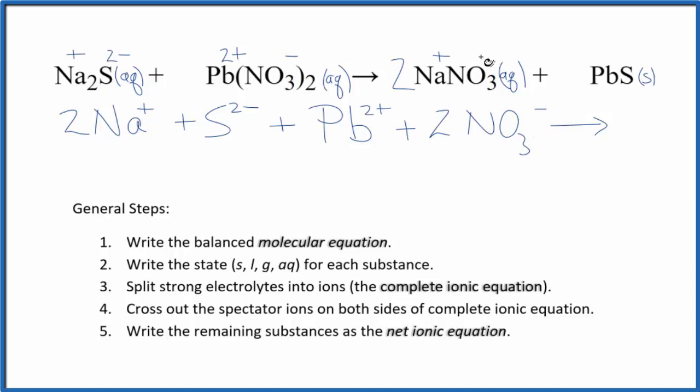For the product, we have 2 sodium ions, and then we have 2 nitrate ions. And then for the PbS, that's a solid. We don't split solids apart in net ionic equations, just PbS like that. This is our complete ionic equation.